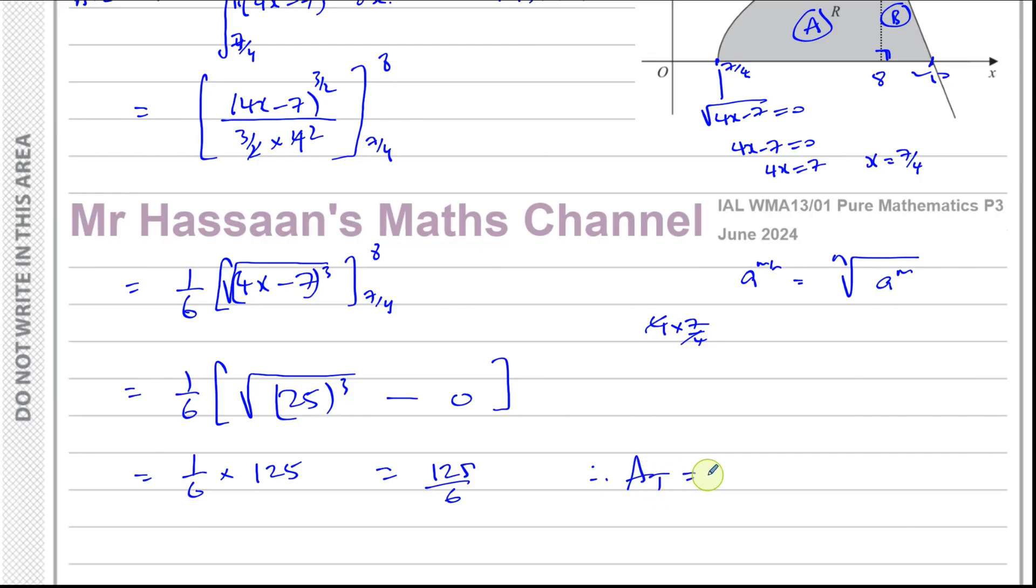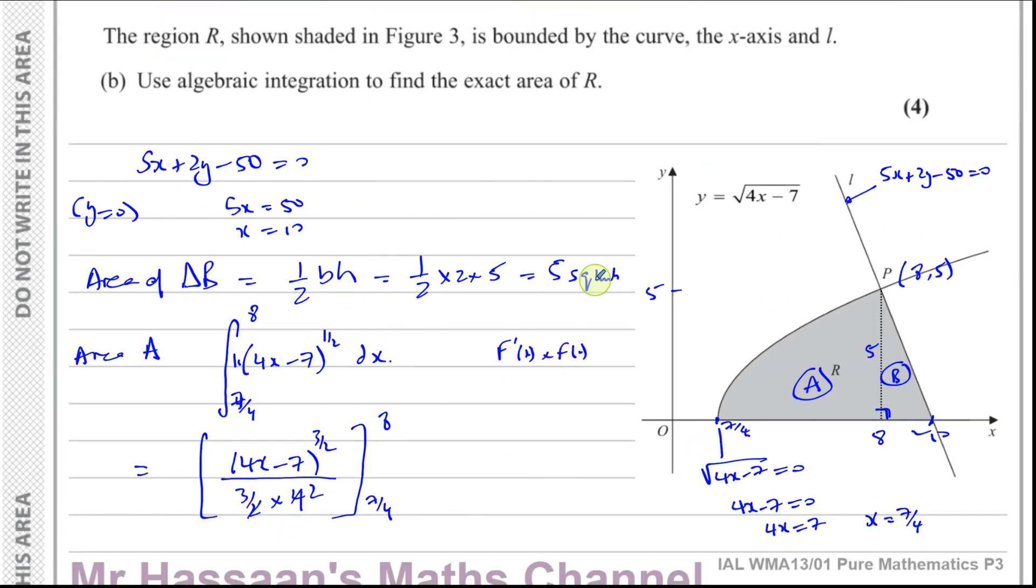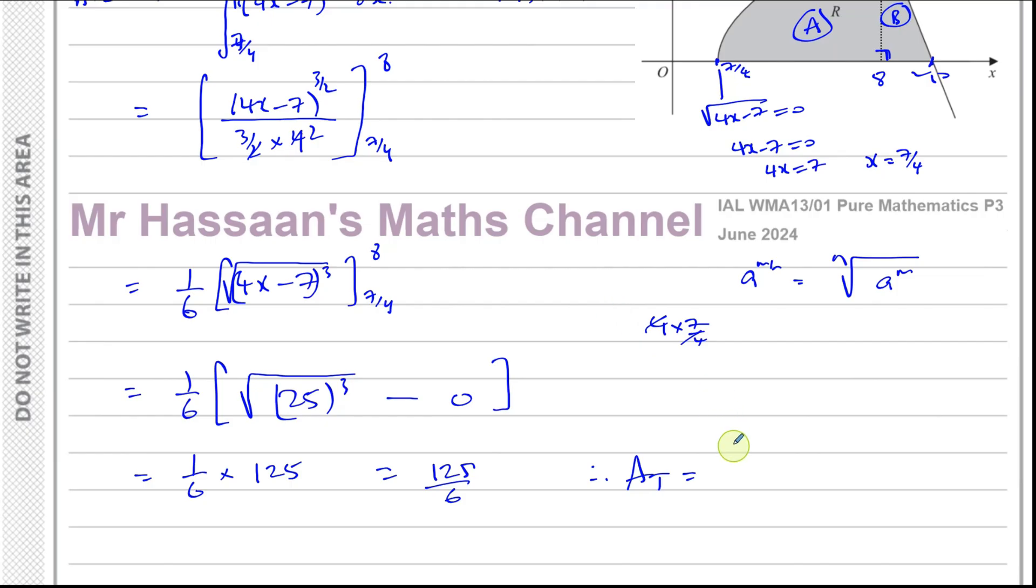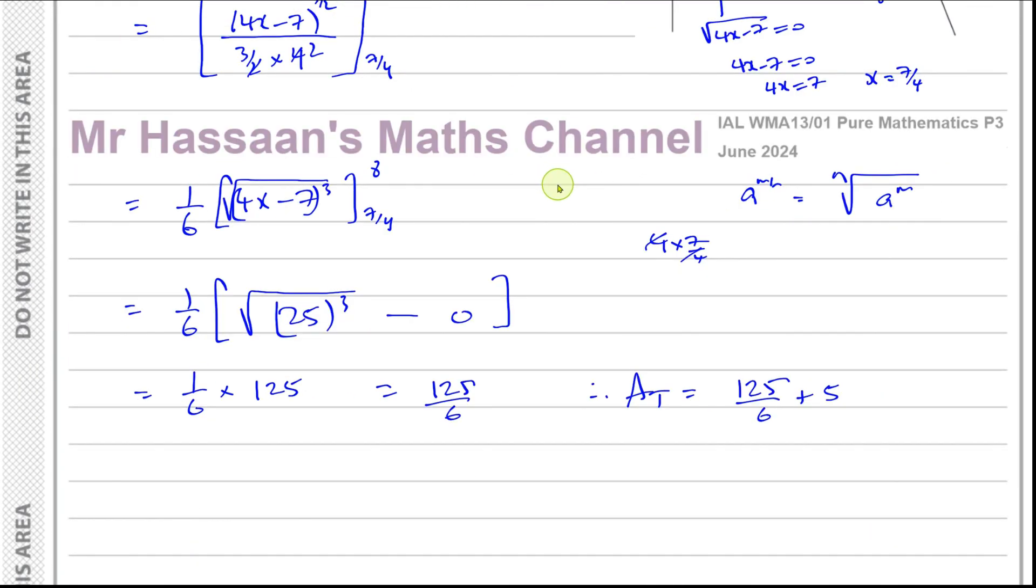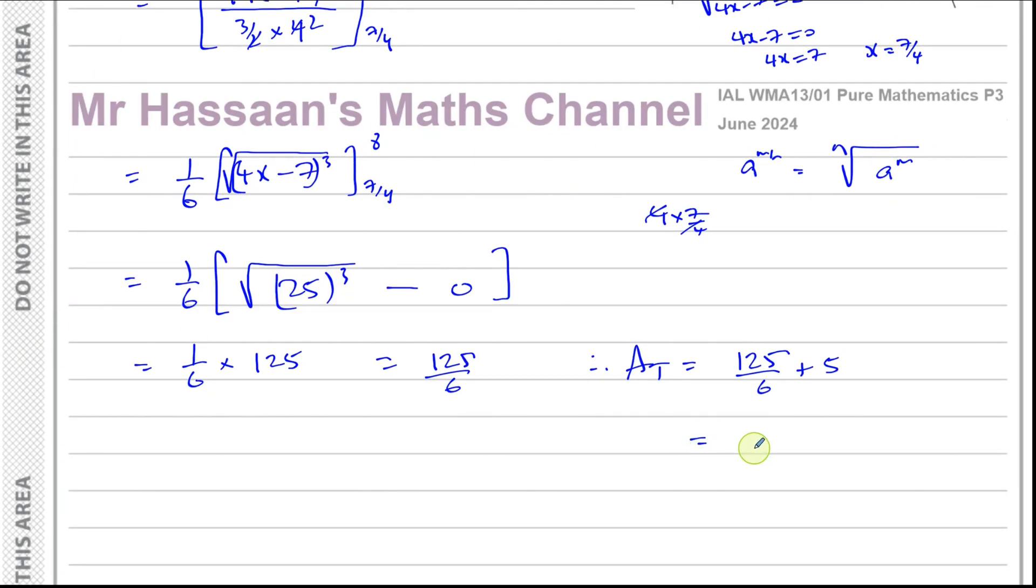Therefore, the total area is going to be the sum of the two areas, which was 5 and 125 over 6. It says write down the exact area, so we want to leave it as an exact fraction. This is going to be 30 over 6 plus 125 over 6, which is 155 over 6. So there we have our answer: 155 over 6 square units.